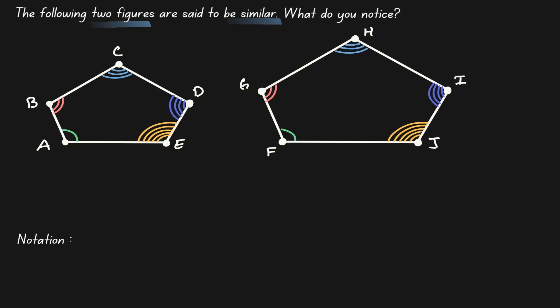Now what are some things that we can notice? The first thing that stands out is that there are a lot of congruent angles. By denotation, notice that A and F both have only one arc, so they're said to be congruent. We can say the same thing about angle B and angle G — they both have two arcs, so angle B is congruent to angle G. C and H are also congruent. D and I are also congruent. E and J are also congruent.